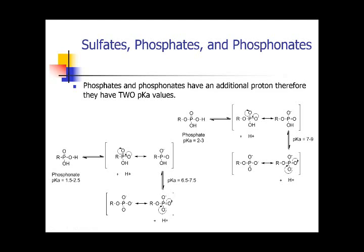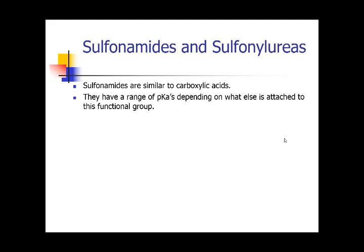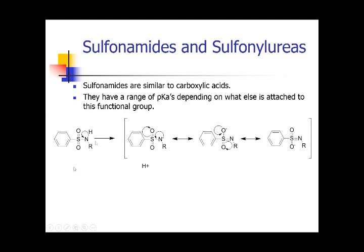Not many drugs on the market contain these four functional groups. More common are sulfonamides and sulfonylureas — again, similar to carboxylic acid. They have a range of pKas depending on what other groups are attached. Here you have your sulfonamides. Replacing the sulfur with a carbon double-bond oxygen gives you an amide; with a sulfur it is a sulfonamide.